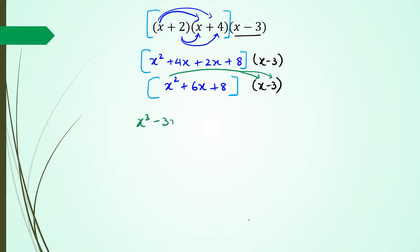Then I'm going to do 6x multiplied by x, which is going to be 6x squared, and then 6x multiplied by negative 3, which is negative 18x. Then I've got 8 times x, which is 8x, and then 8 times negative 3, which is negative 24.